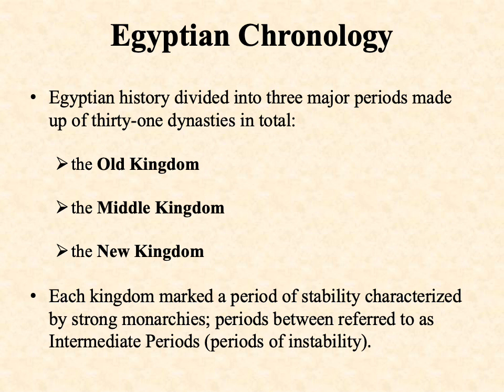When we look at the history of ancient Egypt, we adopt a chronological system the ancient Egyptians used themselves, looking back from a later point. They divided Egyptian history into three major periods: the Old Kingdom, the Middle Kingdom, and the New Kingdom, collectively consisting of 31 dynasties — that is, ruling families. Each kingdom marked a period of stability characterized by strong monarchies.